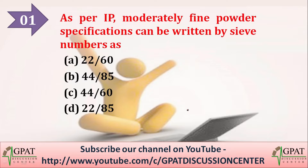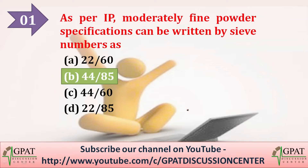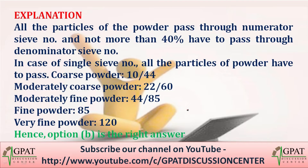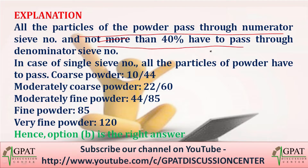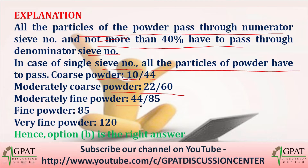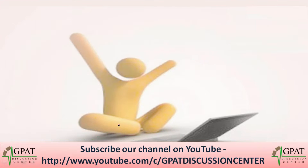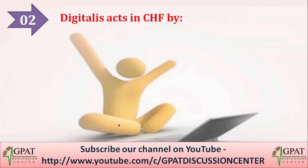As per IP, moderately fine powder specification can be written by sieve number as option B, that is 44/85. All the particles of the powder pass through the numerator sieve number and not more than 40% have to pass through the denominator sieve number. Moderately coarse powder is 22/60, moderately fine powder is 44/85, fine powder is 85, and very fine powder is 1820. So option B is the right answer.